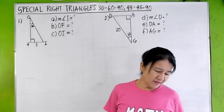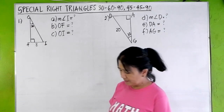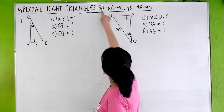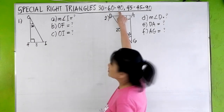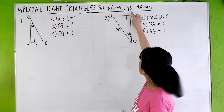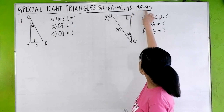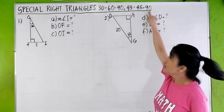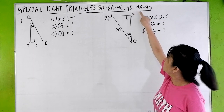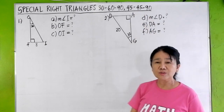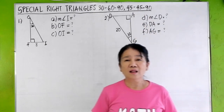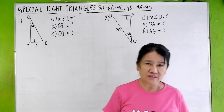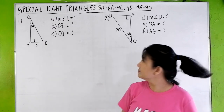There are two kinds of special right triangles. We have a 30-60-90 triangle and a 45-45-90 triangle. As you have learned, a 45-45-90 triangle is what you call an isosceles right triangle. Let's have the rules first.